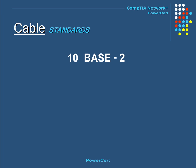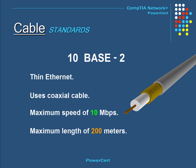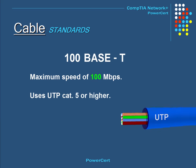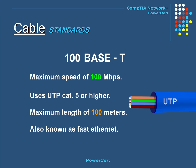10BASE-2, also referred to as thin Ethernet, is a version of Ethernet that uses coaxial cable as opposed to unshielded twisted pair cabling. It has a maximum speed of 10 megabits per second and a maximum length of 200 meters. Other cable standards include 100BASE-T, which has a speed of 100 megabits per second — 10 times faster than 10BASE-T. It uses Category 5 UTP cable or higher and has a maximum length of 100 meters. 100BASE-T is also known as Fast Ethernet.